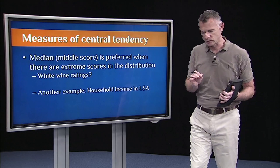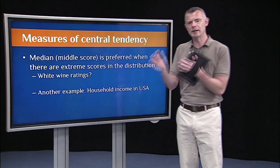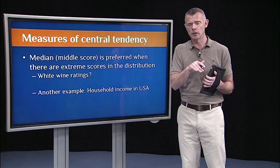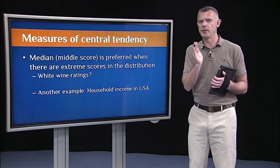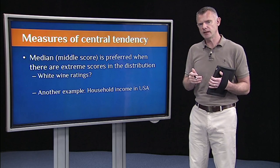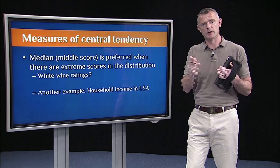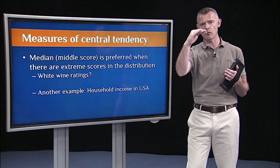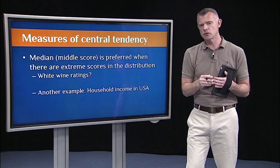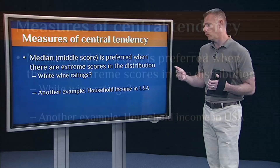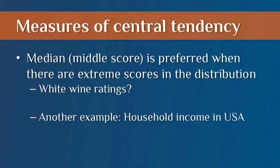If you don't have a normal distribution — in particular, if you have a distribution with really extreme scores, so an extreme positive skew or an extreme negative skew — then you might rather go with the median rather than the mean. That's because those few extreme scores can really bias the mean. Whereas with the median, if you just line the scores up and take the middle one, those extreme scores are not going to bias the median as much.